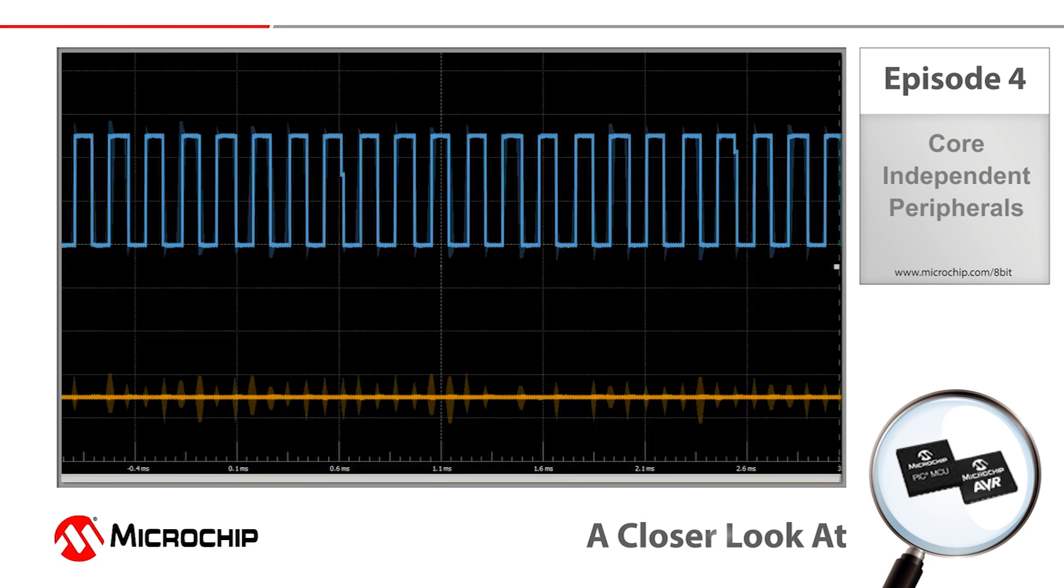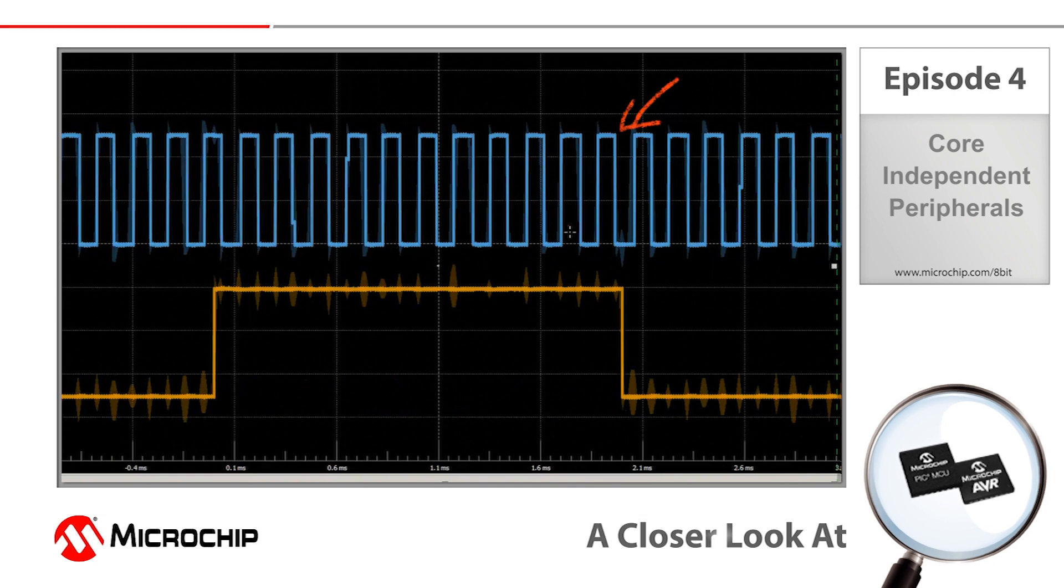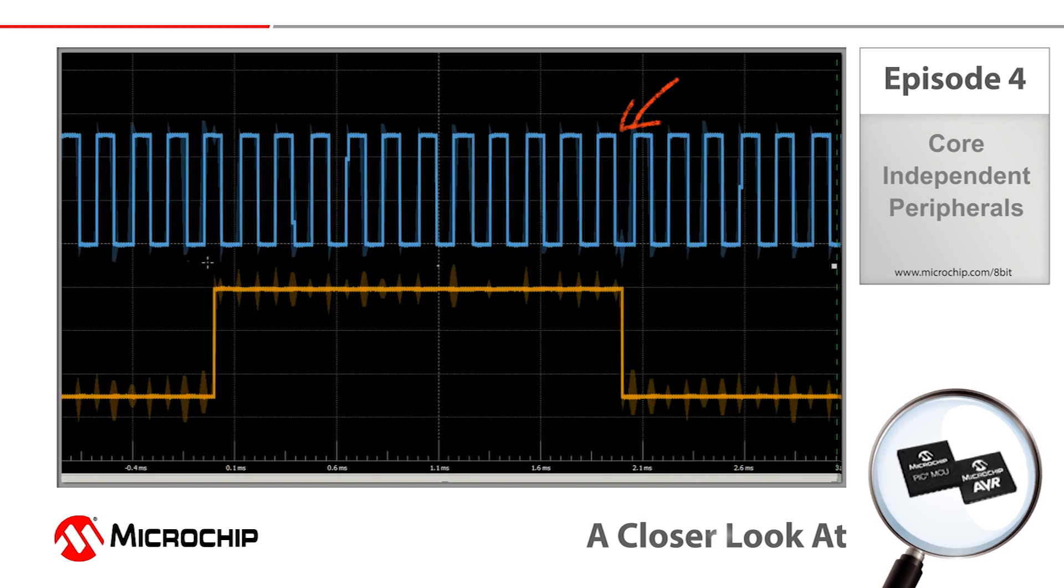I've gone ahead and programmed the ATtiny817 with this application so now let's take a look at our waveforms. Again, here is our toggling IO pin that is being controlled by the core. The difference this time though is that when I push the push button connected to the input, the two millisecond output pulse being handled in hardware by the peripherals doesn't have any effect on the heartbeat signal since the core is never interrupted.